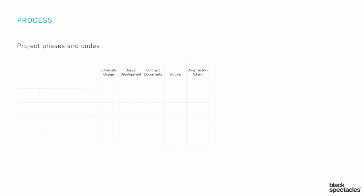We started to talk about the idea of phasing and codes and how those things relate to each other. This particular exam is about programming and early schematic design phasing. To put it in context, we have zoning issues, building code issues, ADA issues, and any number of other specifics to any project — there might be covenants. Pretty much every project will have zoning and building code issues, but the other aspects would be specific to that particular project.